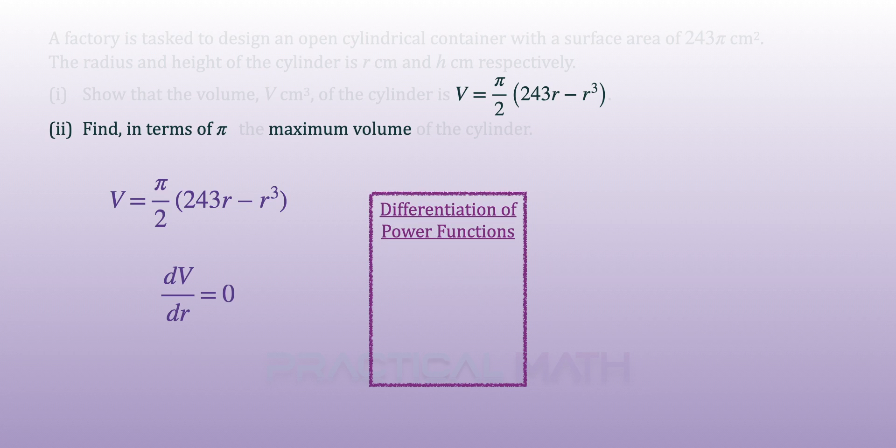To get the first derivative, we will need the differentiation of power functions. Where we differentiate x^n with respect to x, we get nx^(n-1). Bring down the power, power minus 1. Differentiating 243r gives a result of 243. And differentiating -r³ gives a result of -3r². Bring down the power, power minus 1.